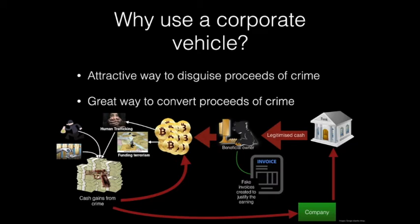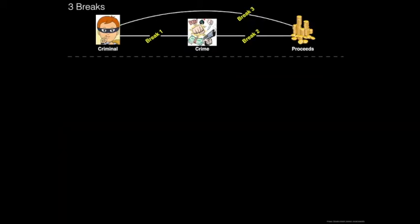Corporate vehicles are an attractive way to disguise and convert the proceeds of crime before introducing them into the financial system. The evolved criminal today looks far more long-term. They try to achieve three breaks: first, break the crime from themselves — disassociate from the criminal act; second, break between themselves and the criminal proceeds; third, break their link to those proceeds as a result of the crime.